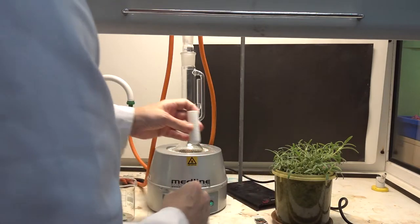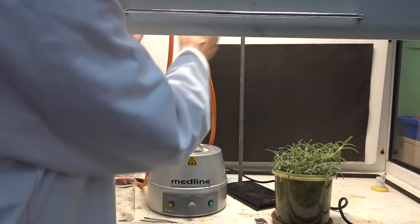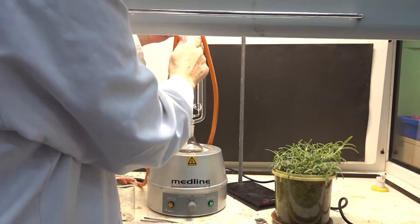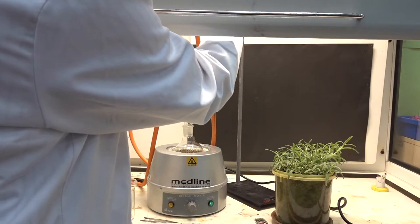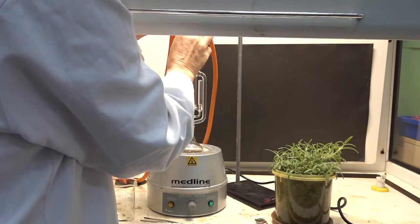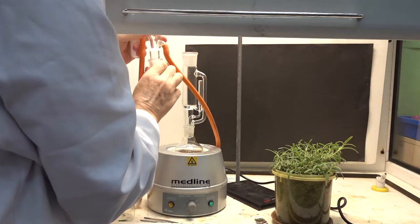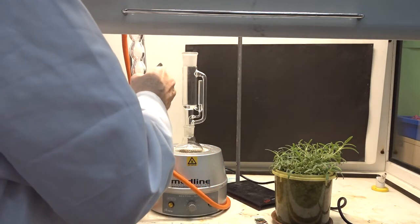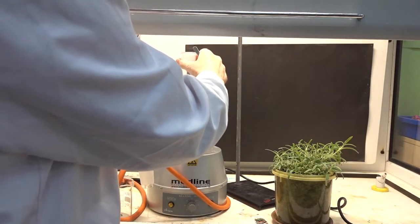So now we need to place the thimble in the Soxhlet apparatus, and it's a tricky operation here. So just remove the Allihn condenser from the top. We'll have a look at that in a while. We need to do that carefully as it can become quite... okay, so we'll just take the thimble and we drop it into the stage there. So now we've got our sample in the tube.